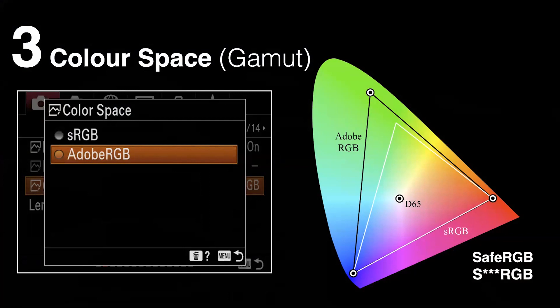The third thing is colour gamut, often referred to as colour space on cameras. The typical default on most cameras out of the box will be set to sRGB. This is a standard space often referred to as a safe RGB colour space because it's usually what the internet assumes all photos occupy. The only problem is it's not very large and not really appropriate for the bigger, richer colour saturations achievable when printing. So way back in 1998, Adobe created a larger colour space called Adobe RGB 1998, which is especially bigger in the cyans and greens.